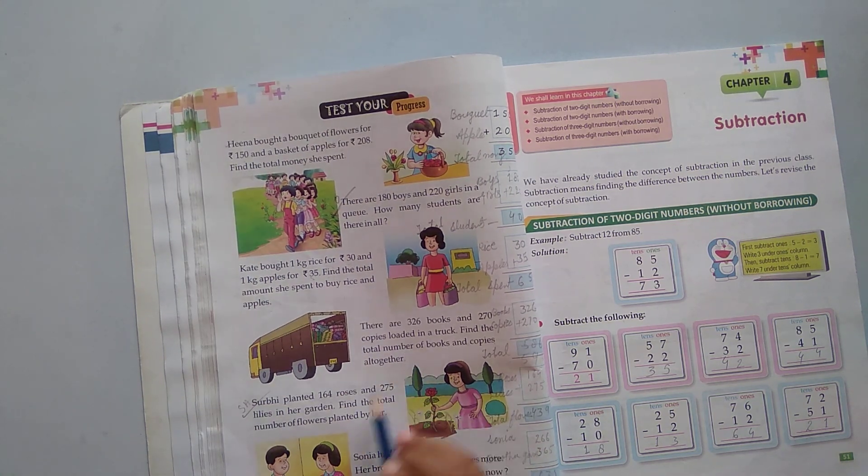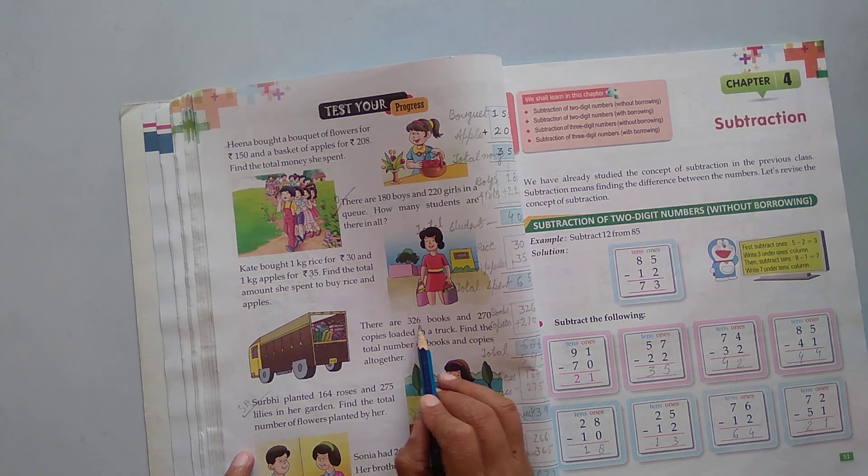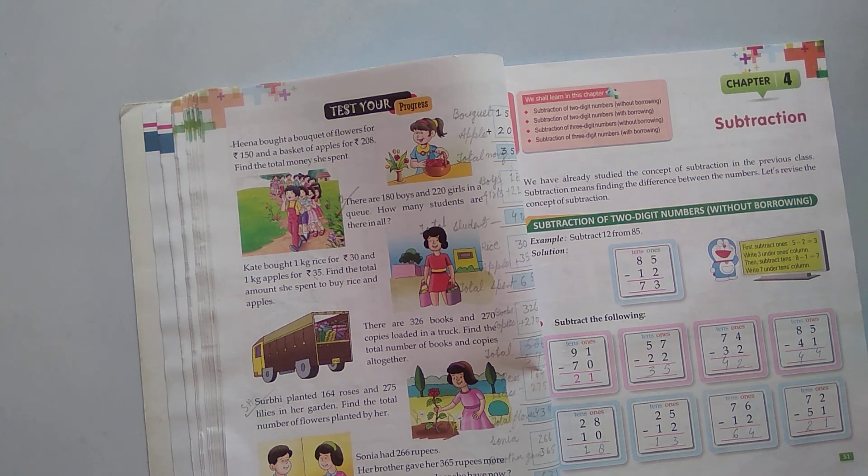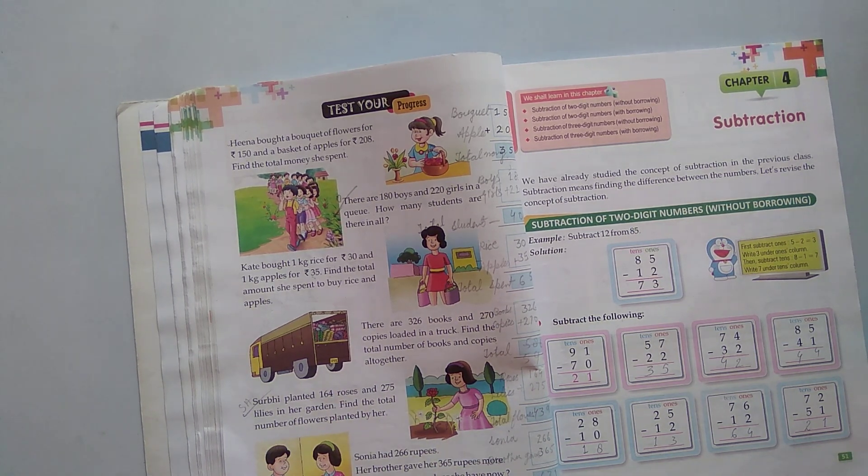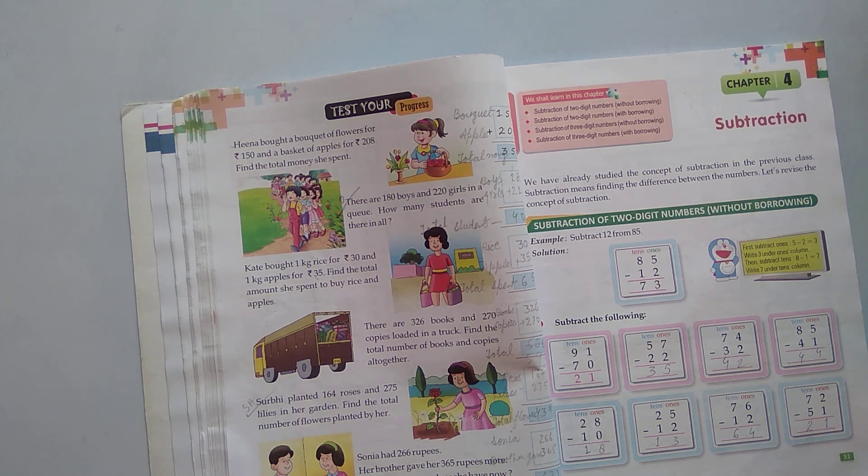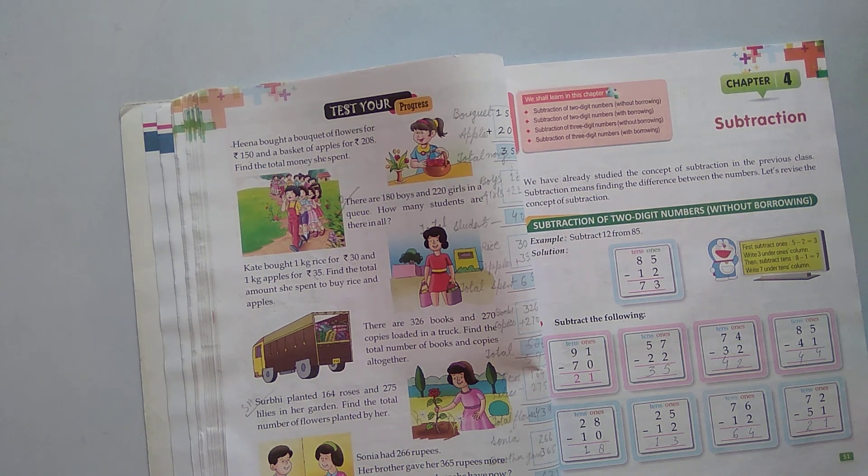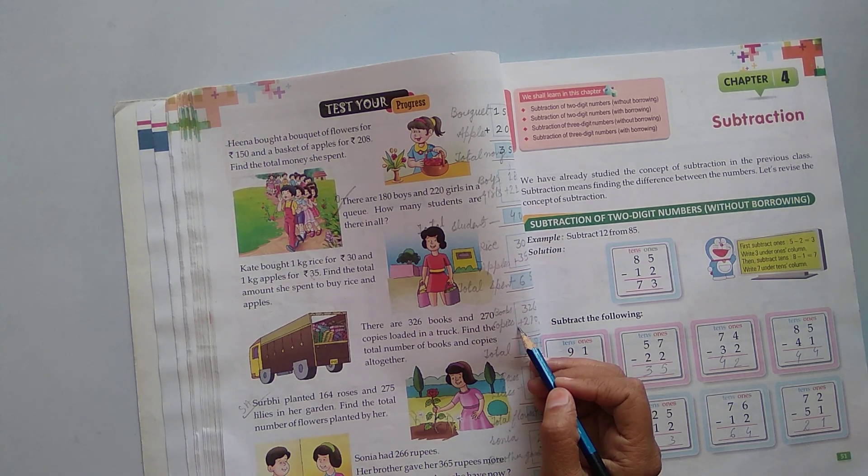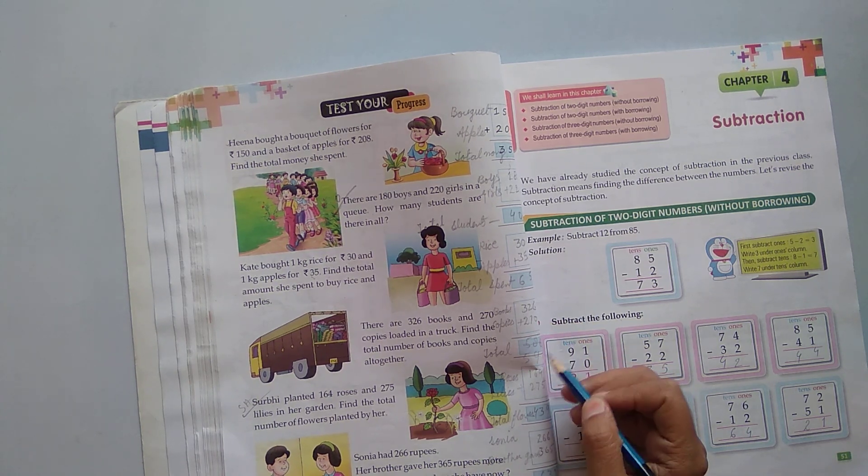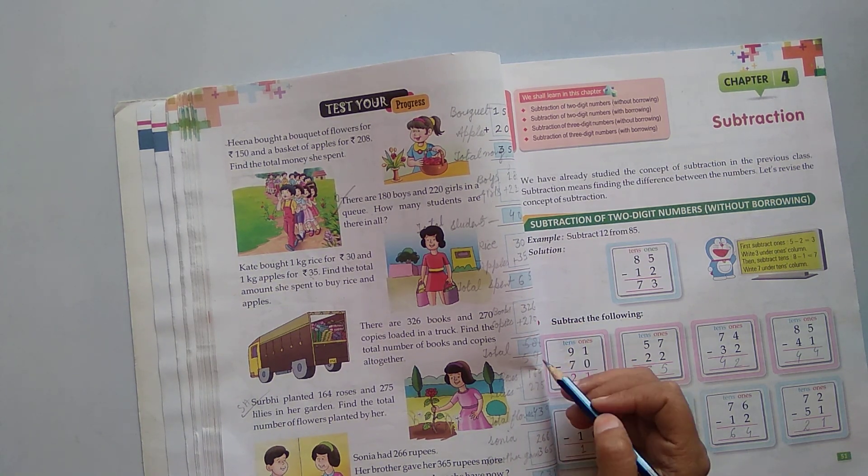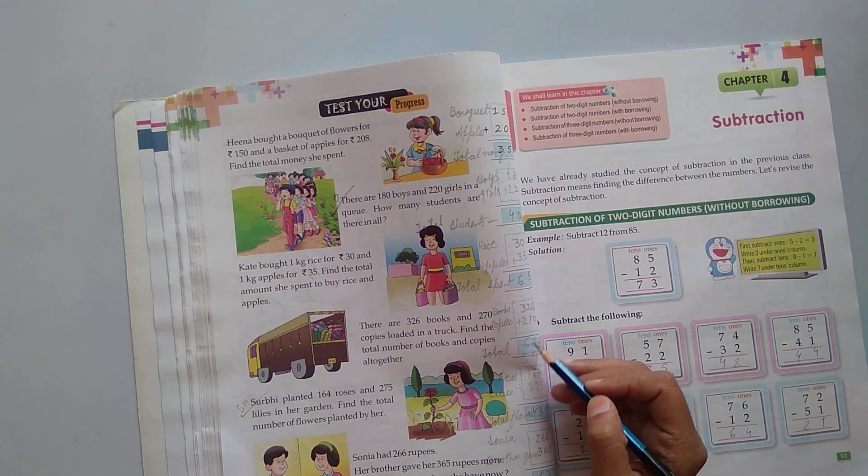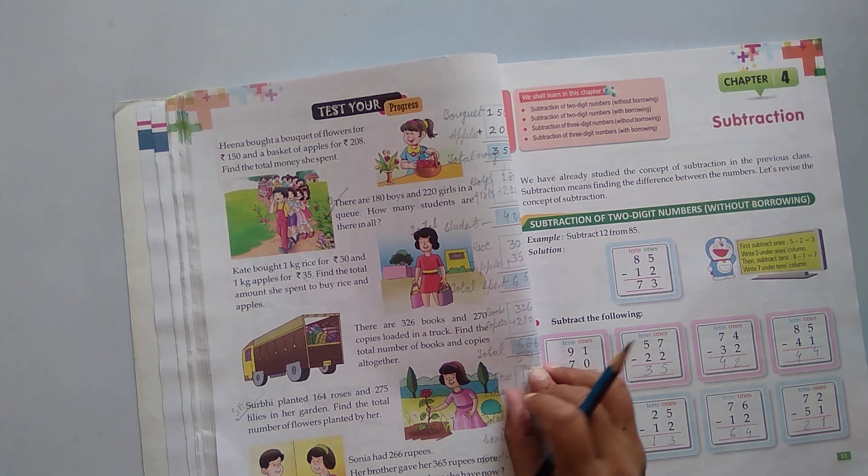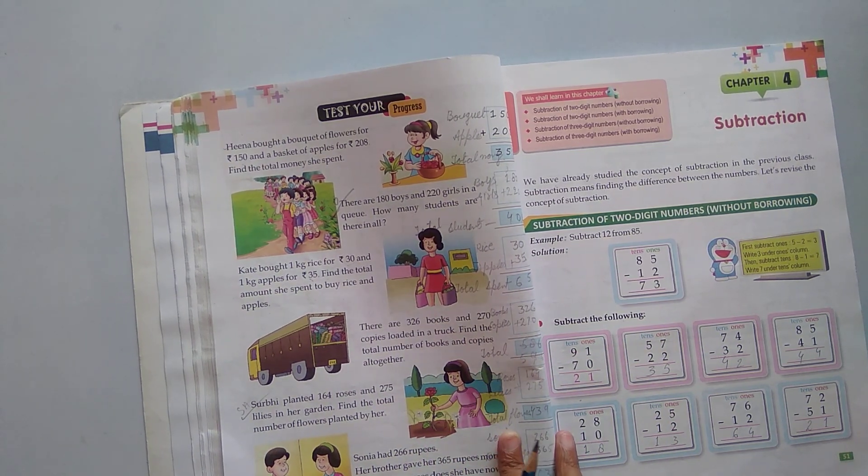Next, there are 326 books and 270 copies loaded in a truck. Find the total number of books and copies. 326 books and 270 copies. Total is how much? Add: 6 and 0, it becomes 6. 2 and 7, it becomes 9. 3 and 2, it becomes 5. So 596.